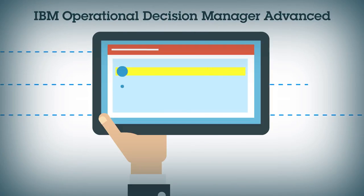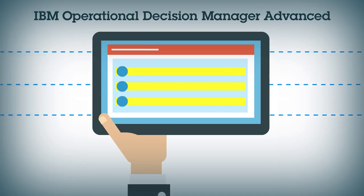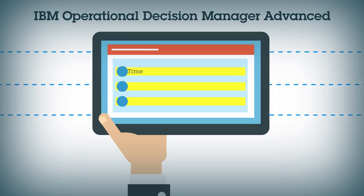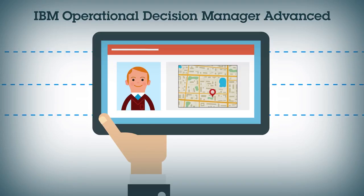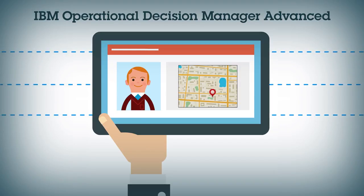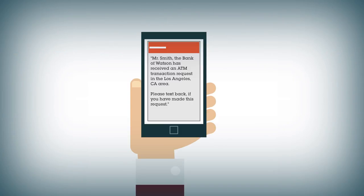Because the bank uses IBM Operational Decision Manager Advanced to capture events at the time of interaction and maintain relevant context, they're able to correlate the time and location of this transaction against the time and location of George's earlier balance check and detect fraudulent activity. A text message warning of suspicious activity and requesting review and validation is automatically generated and sent to George's mobile.